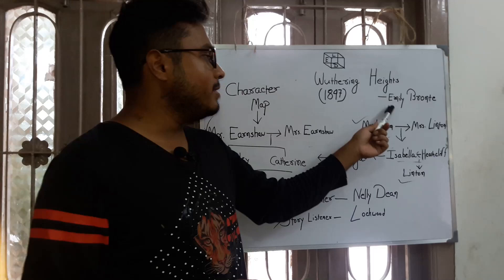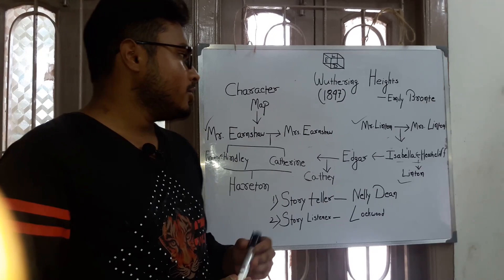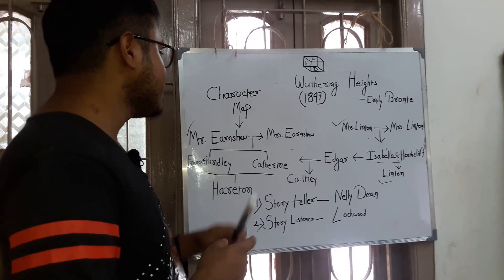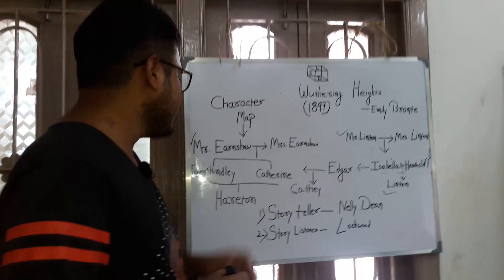Wuthering Heights was written by Emily Bronte in 1847 under the pseudonym of Alice Bell. Before we learn about the novel, we have to focus on the character map of the novel. I have made a character map here, so we have to focus on it.